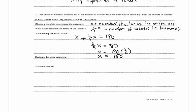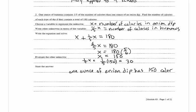Now we evaluate the other unknown. The calories in hummus is one fifth x, so one fifth times 150 equals 30. We can state the answer: one ounce of onion dip has 150 calories, and one ounce of hummus has 30 calories.